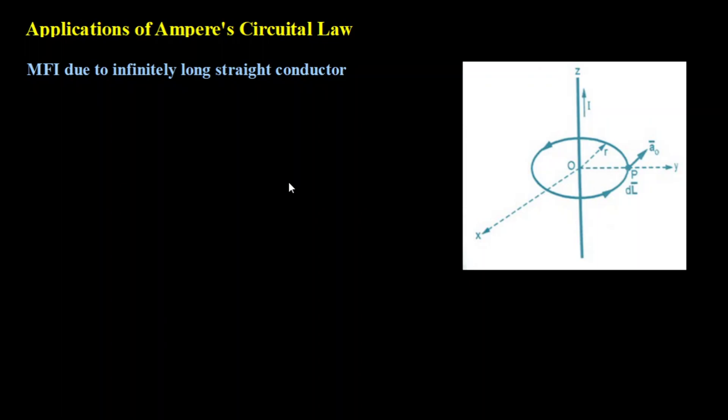So to start with the derivation, I have to consider an infinitely long straight conductor placed along the z-axis as usual, carrying some current I, with the current flowing in the direction of the positive z-axis. Since I am applying Ampere's Circuit Law, I have to consider a closed path which is symmetrical around this conductor.